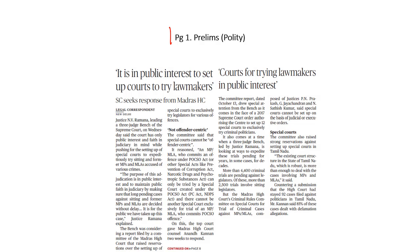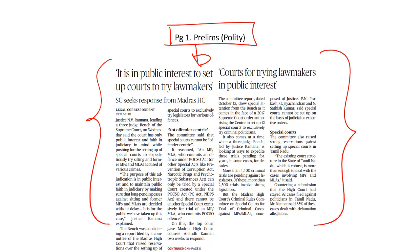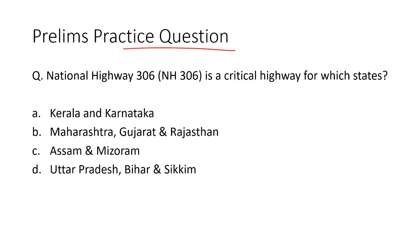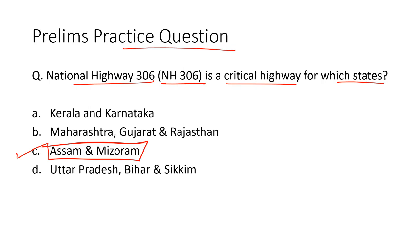This question has been asked because on page number 1 we have an article where the POCSO Act finds a mention. According to this article, the Supreme Court is looking to constitute a special court where lawmakers can be tried separately for their alleged crimes. Now let's take up the next question. National Highway 306 or NH306 is a critical highway for which states? The correct answer is option C, Assam and Mizoram.